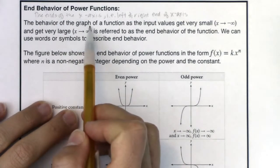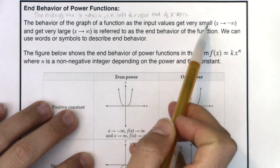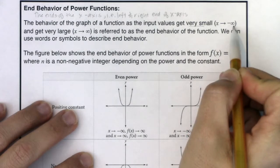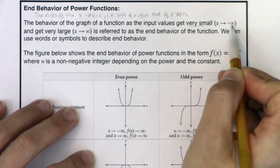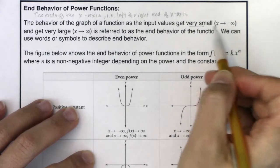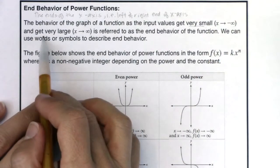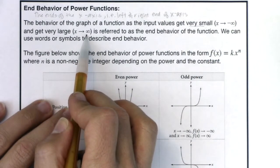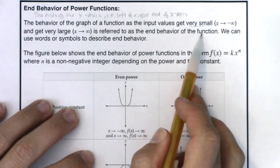The behavior of a graph as input values get very small — meaning x goes to negative infinity, which is a really large negative number — versus getting very large, when x goes to positive infinity. That's referred to as the end behavior of the function.